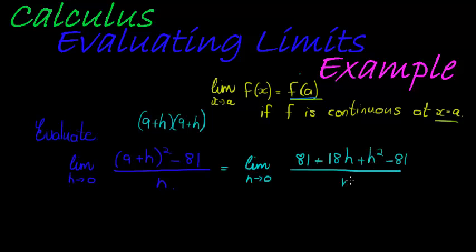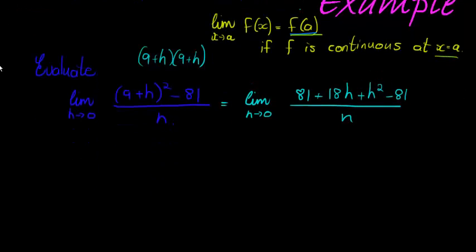And now I see in the numerator, 81 minus 81 would leave me with the limit of h tending to 0 of 18h plus h squared over h. And then I can see I have h's in both of my terms in the numerator.